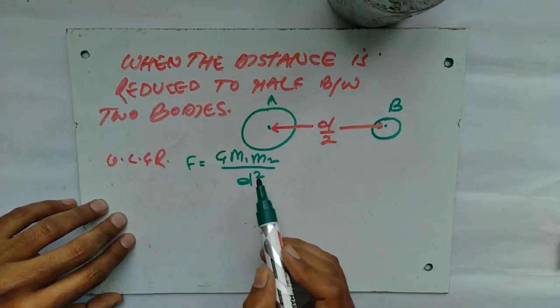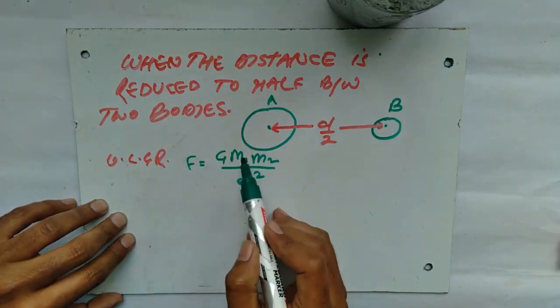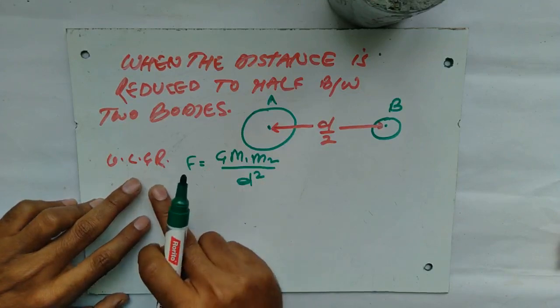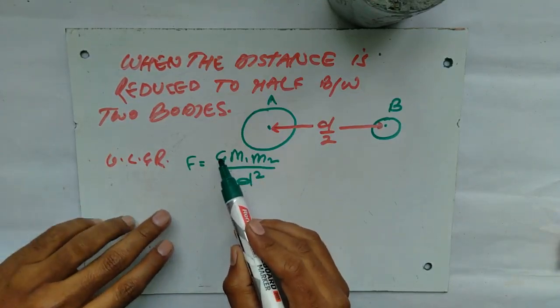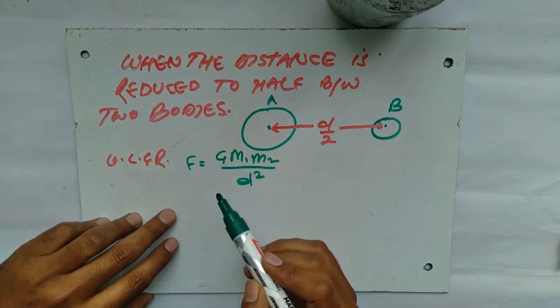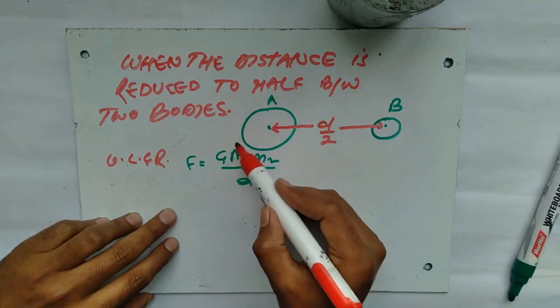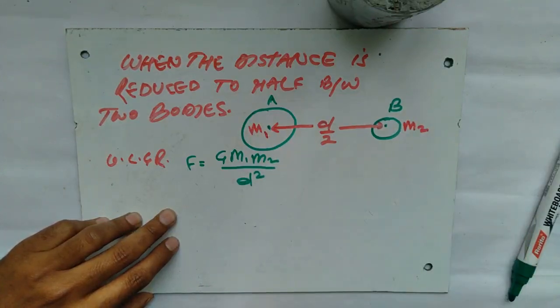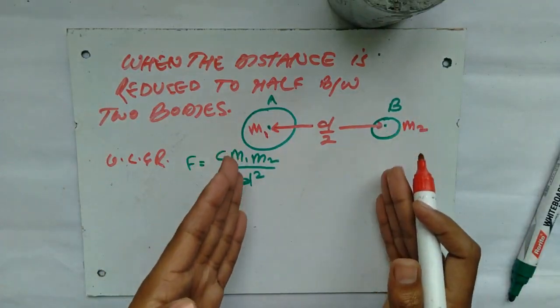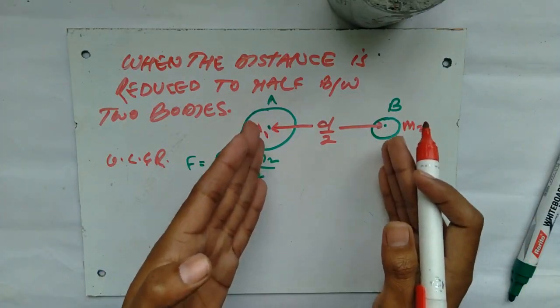For those who do not know what this is, this is the formula of universal law of gravitation. Where G is the universal gravitational constant and m1 is the mass of body A and m2 is the mass of body B and d was the earlier center to center distance between them.